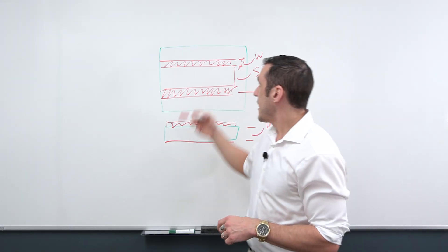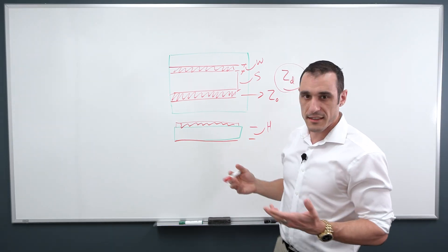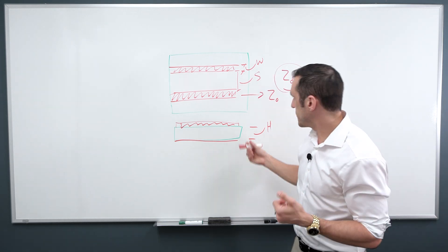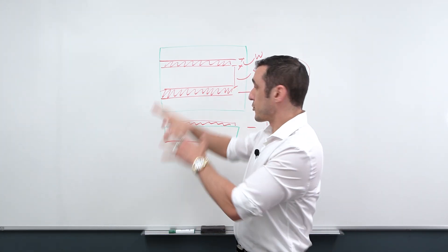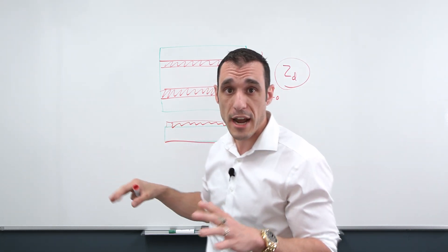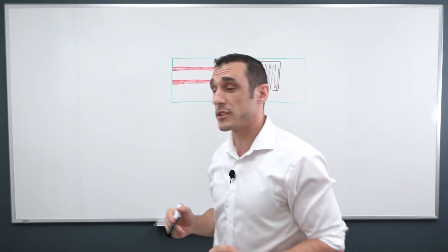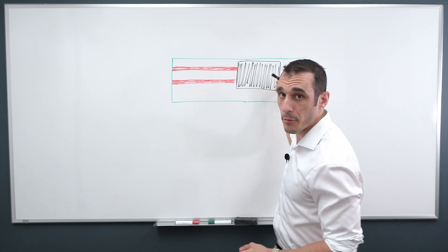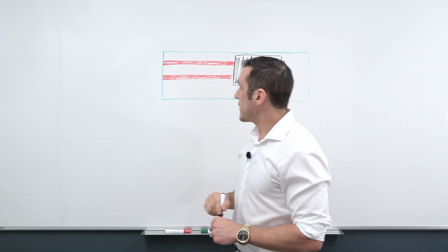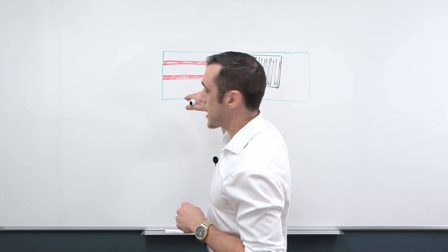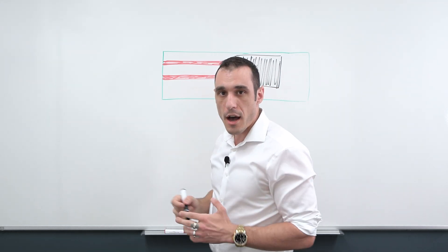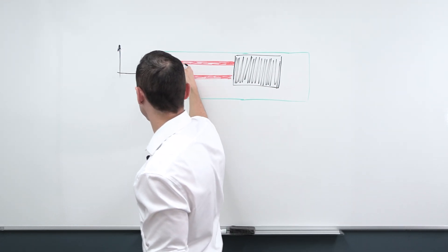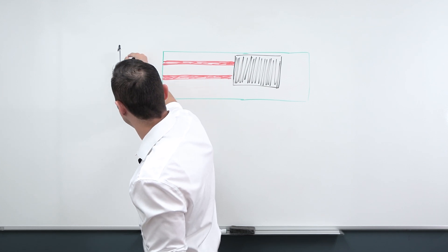So now the question is how do these two traces carry a signal? If you look at the signal that's carried by a differential pair, the signals are equal and opposite. So if I draw out a graph of the signal for the top trace, it might look something like a square wave at one volt.